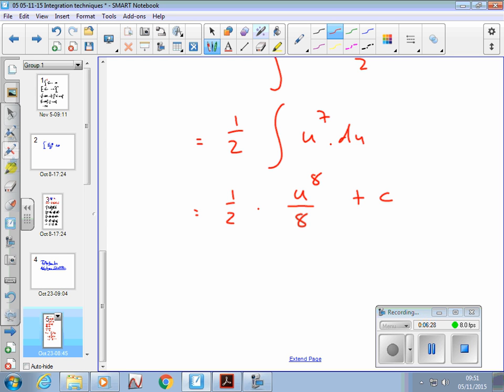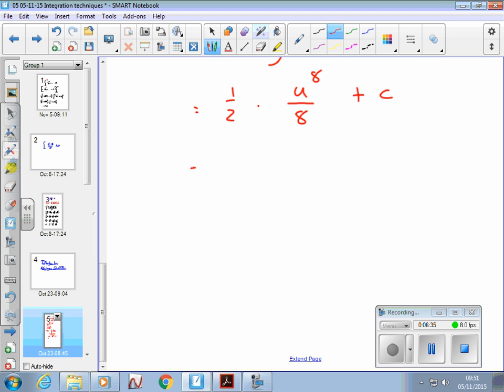And then I just consolidate my numbers into one big number. So 2 and 8 underneath becomes 16. So I can call that u to the 8 over 16 plus c. Done.